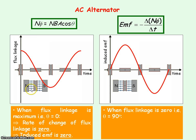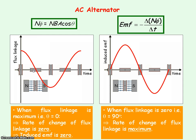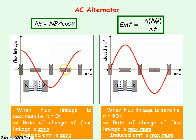When flux linkage is zero — that is when the plane of the coil is parallel to the magnetic field lines, so theta equals 90 degrees — from the gradient we get maximum gradient, meaning maximum rate of change of flux linkage, so the induced EMF is maximum. At a quarter of a cycle, the gradient is maximum and negative, but because of the minus sign, that gives a maximum positive induced EMF. At three quarters of a period, the gradient is maximum and positive, but because of the minus sign, the induced EMF will be maximum and negative. Remember, the minus sign is because of Lenz's Law.